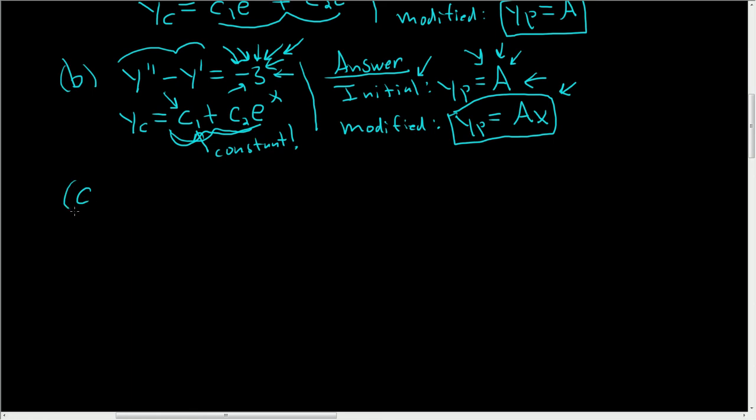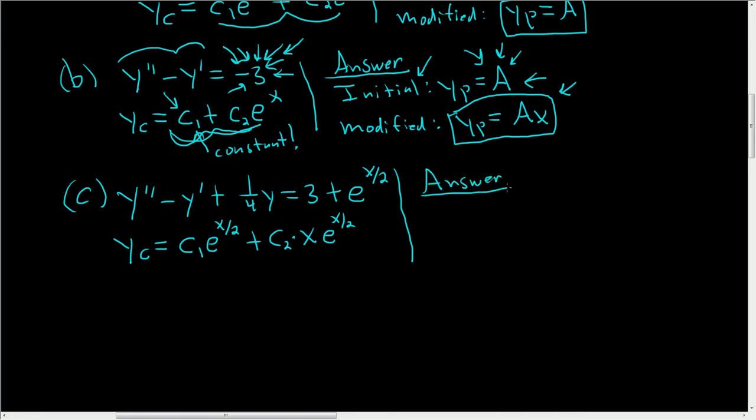Let's do another one. Y double prime minus y prime plus 1 fourth y equals 3 plus e to the x over 2. In this case, via some mathematics, you can find the homogeneous solution. It's c sub 1 e to the x over 2 plus c2 times x e to the x over 2.